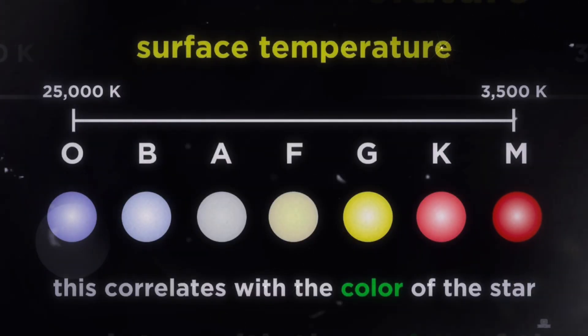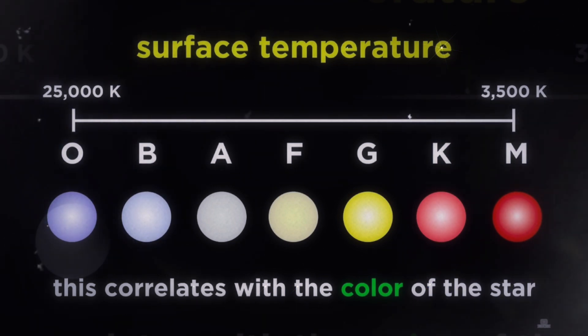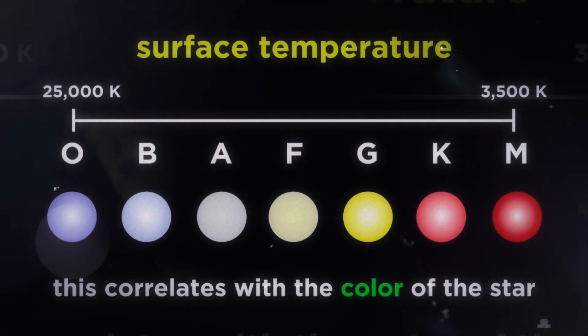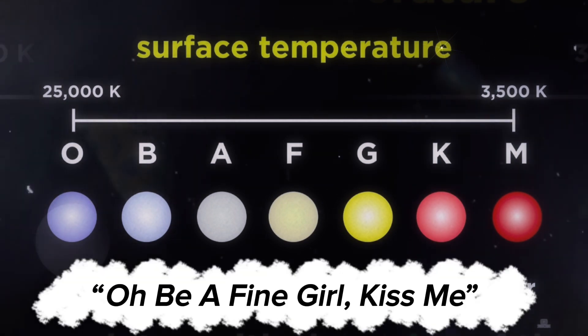Based on their temperatures, the stars in the cosmos are classified into seven broad categories: O, B, A, F, G, K, and M. An easy mnemonic for these sets is Oh, Be A Fine Girl, Kiss Me.